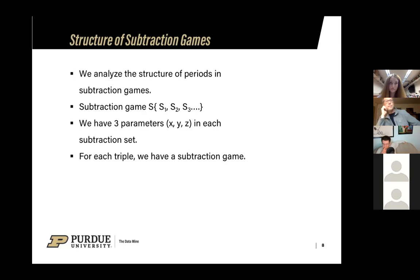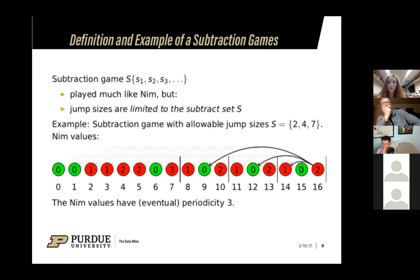You can only move values in the subtraction set X, Y, and Z, or as we can see on the screen, S1, S2, S3. NIMSUM values have an eventual periodicity of 3. The subtraction game is made up of three elements. When it is your turn, you can only take from the subtraction set X, Y, Z. For each triple, we have a subtraction game. This is an example of what the period, the underlying math for the subtraction game, looks like. The way these jump sizes work is that it is the smallest number that you cannot jump back to.